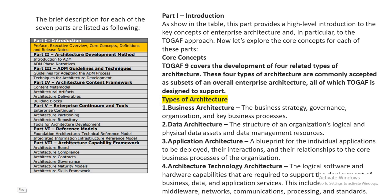Part one covers the overview, core concept definition, and part two is the architecture development method. Part four is the architecture content framework, and then enterprise continuum and tools, reference models, and architecture capability frameworks.